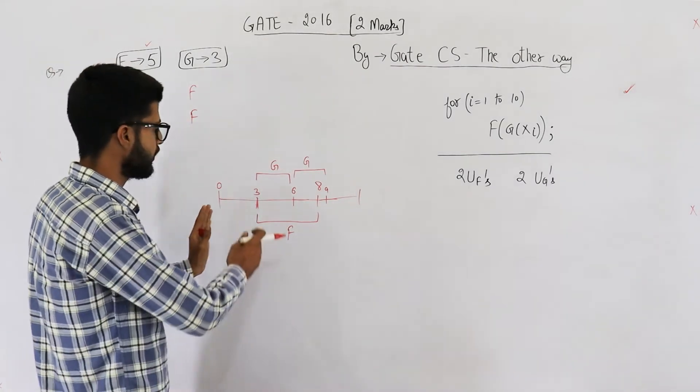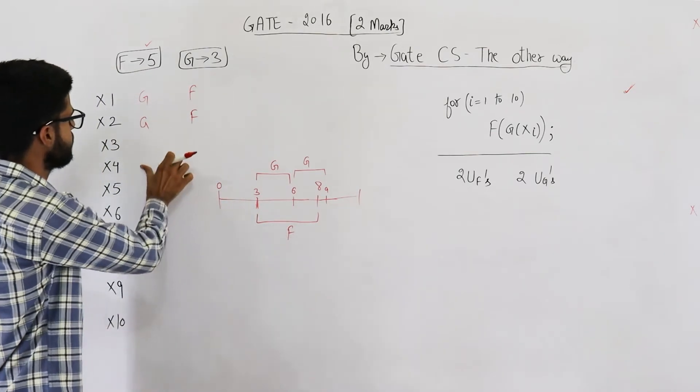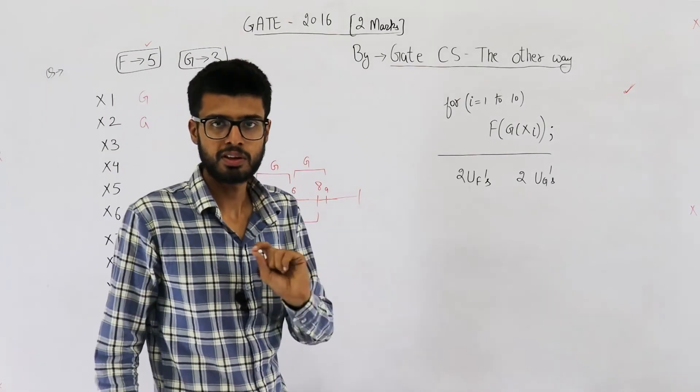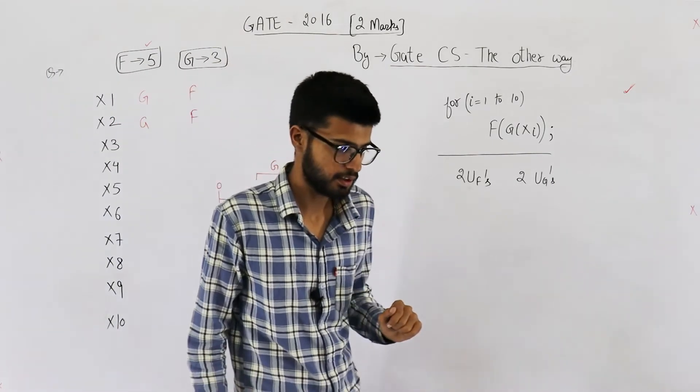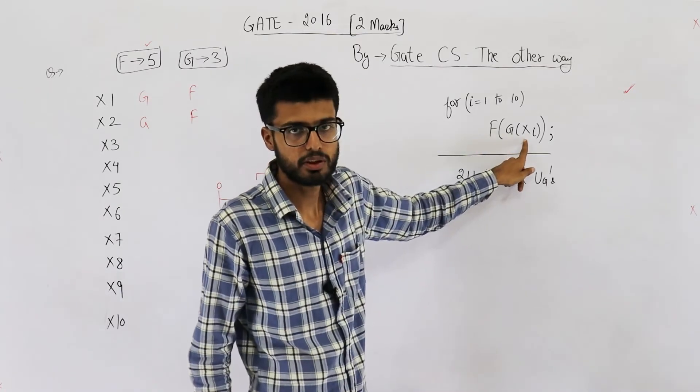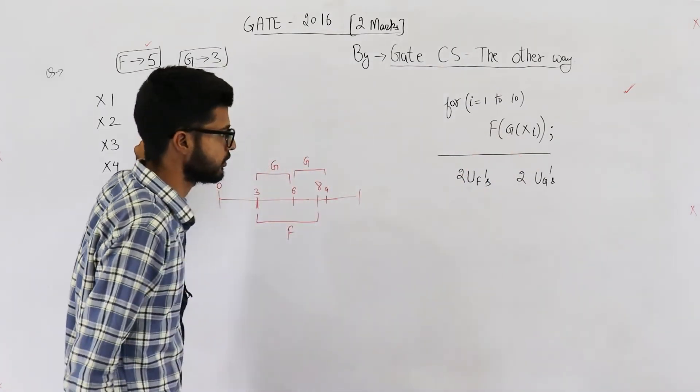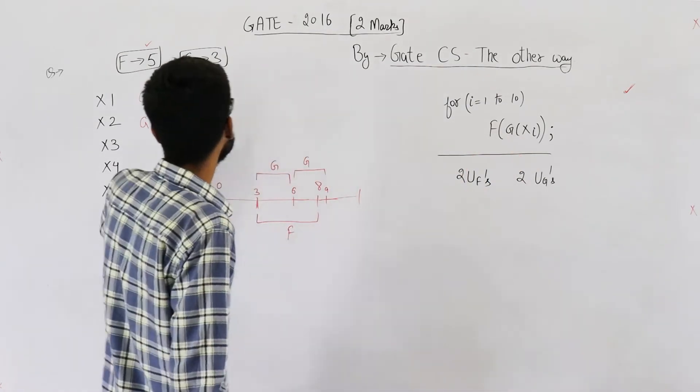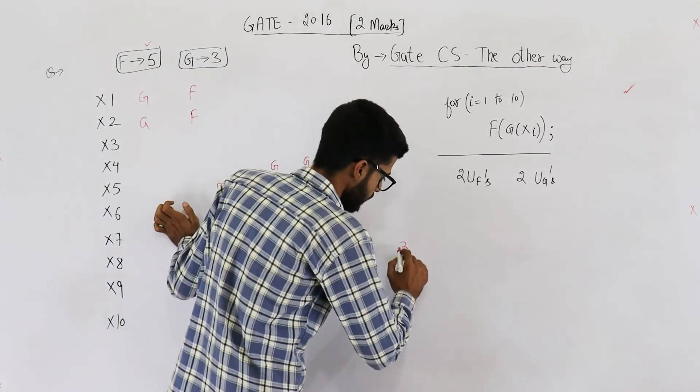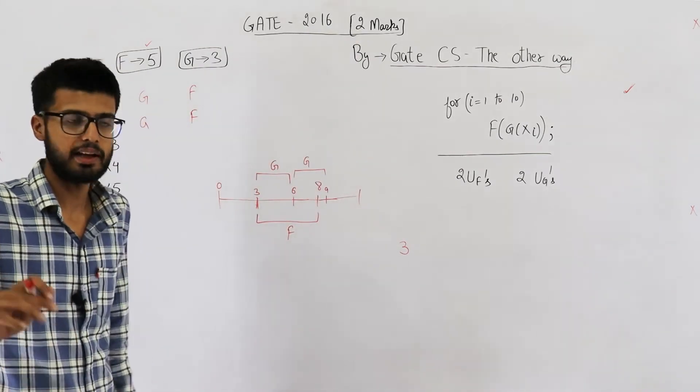So, the main thing to be noticed is, in first 3 seconds, the initial 3 seconds, these 3 seconds, unit f has to be free. Unit f cannot be used in first 3 seconds because f requires g of xi. g of xi takes 3 seconds. Only after the first 3 seconds, the unit f can be used for computation.